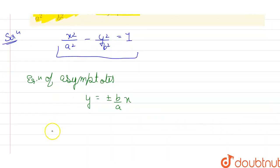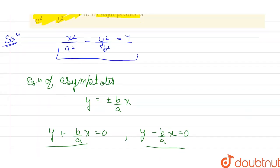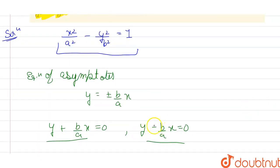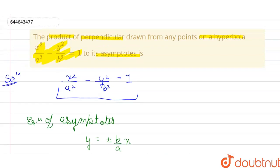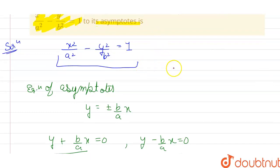We can clearly see we have two asymptote equations. Asymptotes are basically tangents to the hyperbola which meet it at the point at infinity. Now the problem says to take any point on the hyperbola. I will take point P in parametric form as (a sec θ, b tan θ). From this point, I have to draw perpendiculars to the two asymptote lines and find the product of those distances.